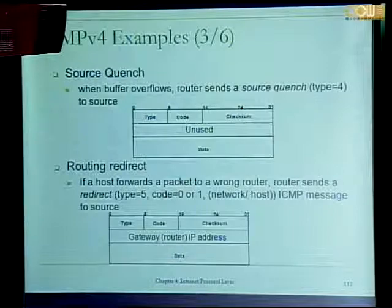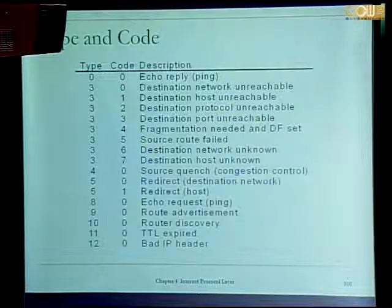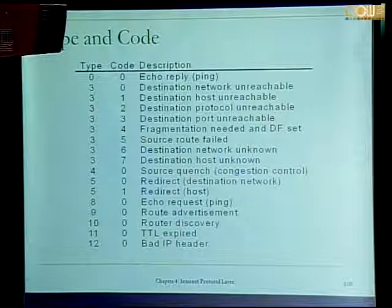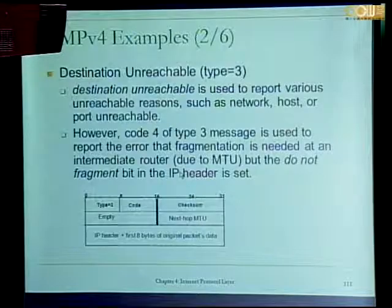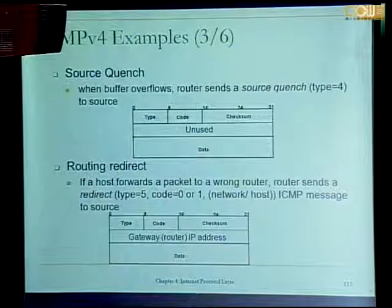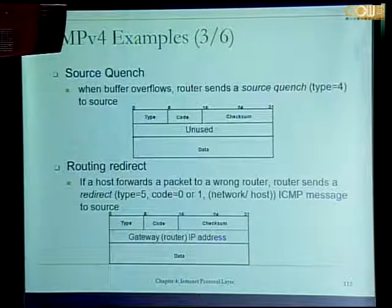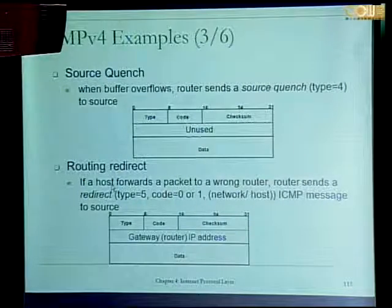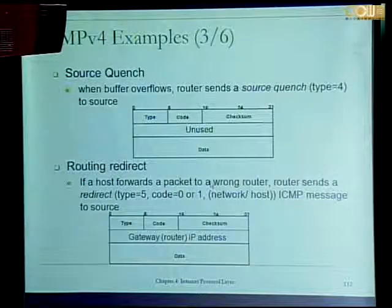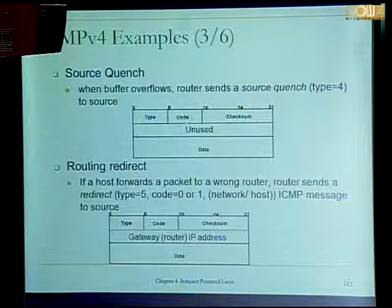Source quench is also an ICMP message, used for congestion control. You send a source quench message when you have a buffer overflow — when a packet comes in but the buffer has overflowed and there is no space to store the packet, then you send an ICMP source quench message to the source. Routing redirect: if the packet is forwarded to a wrong router, that router will send an ICMP redirect message to the source.